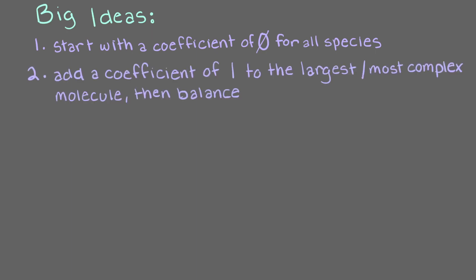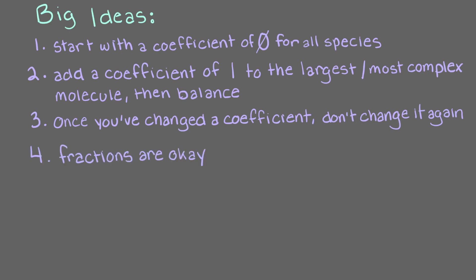Just to recap some of the big ideas in this video, start with a coefficient of 0 for all species. Add a coefficient of 1 to the most complex molecule, and then start changing the other 0s until the reaction is balanced. Once you've changed a coefficient from 0, don't touch that molecule's coefficient again. Don't worry about fractions. They're perfectly okay.